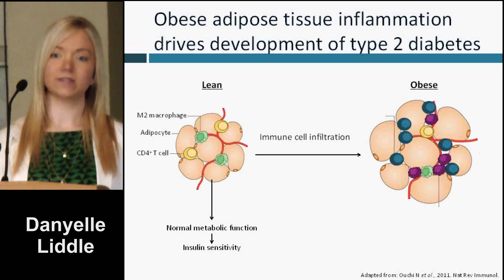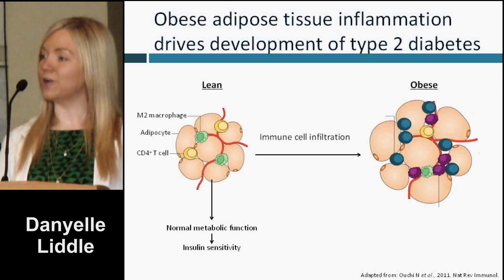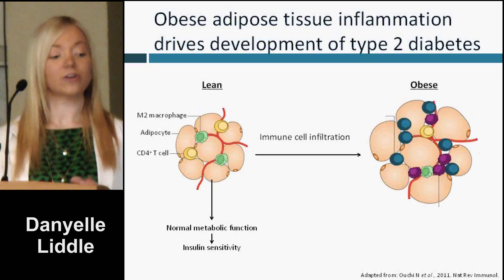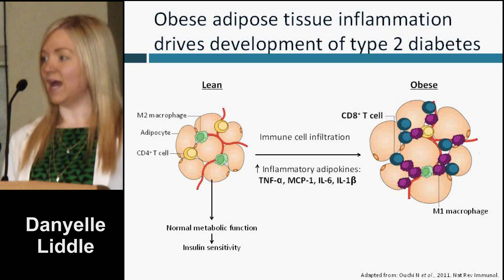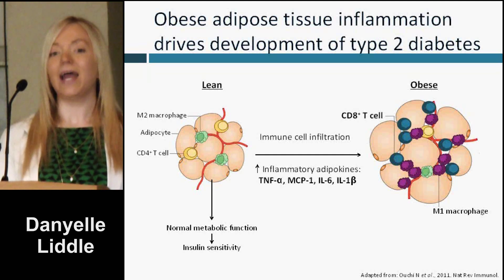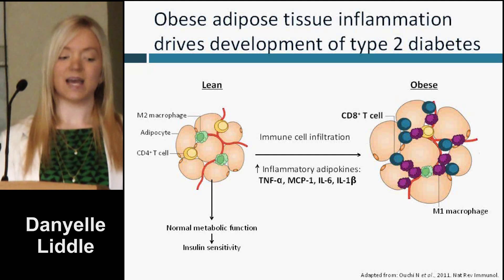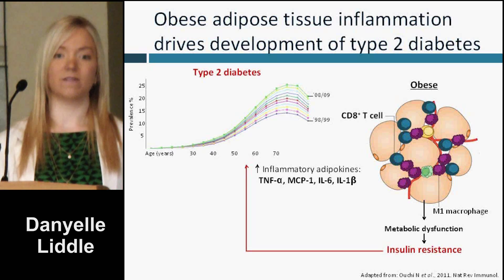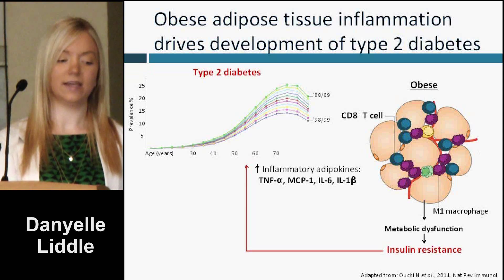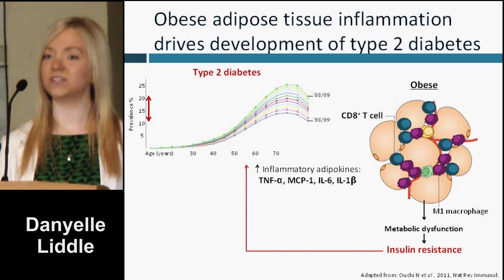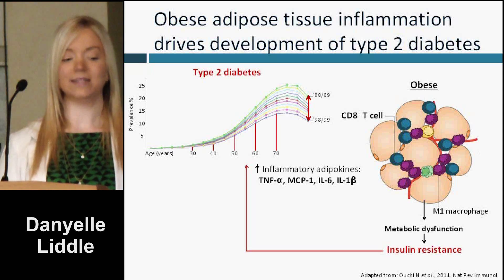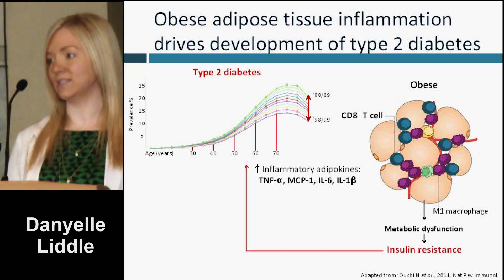When we overeat, during times of excess energy consumption, immune cells are recruited to and infiltrate adipose tissue to help it expand and remodel itself. That, in itself, is a normal, healthy process, but the problem in obesity is that our adipose tissue cannot keep up with the persistent demand to increase its storage capacity, and so this process of immune cell infiltration becomes uncontrolled.